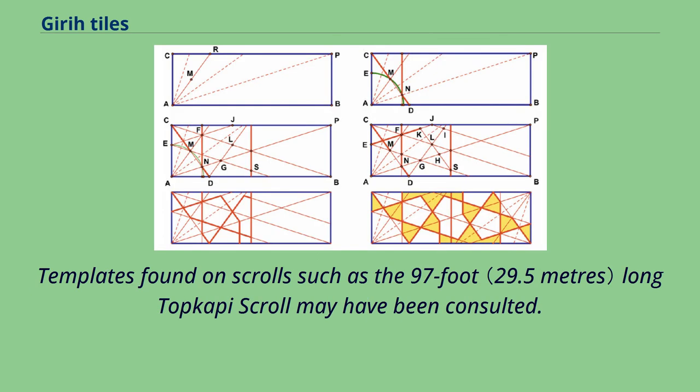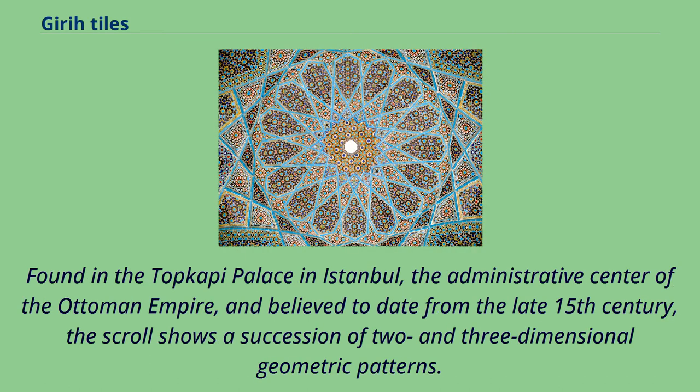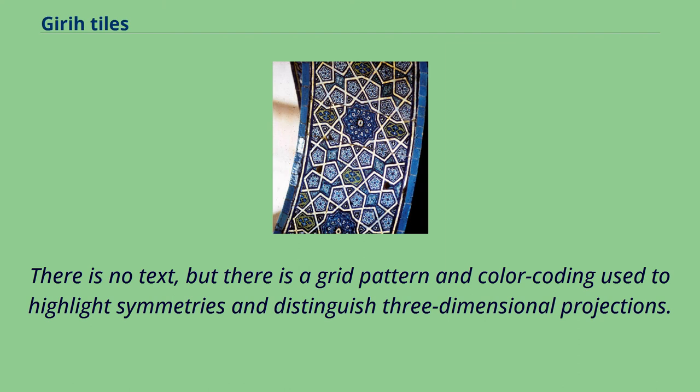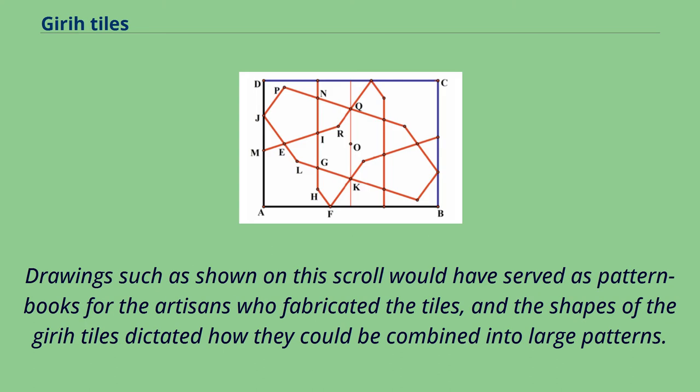Templates found on scrolls, such as the 97-foot-long Topkapi scroll, may have been consulted. Found in the Topkapi Palace in Istanbul and believed to date from the late 15th century, the scroll shows a succession of two and three-dimensional geometric patterns. There is no text, but there is a grid pattern and color coding used to highlight symmetries and distinguish three-dimensional projections.